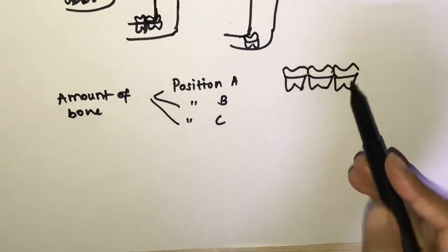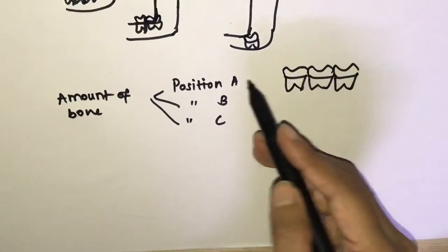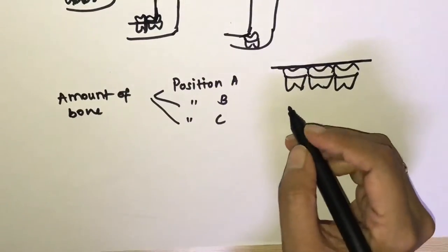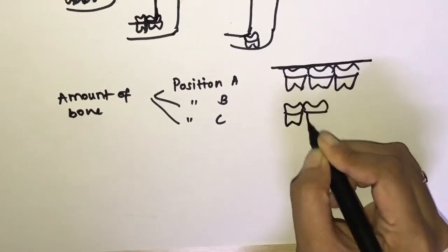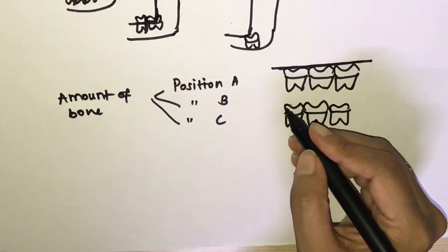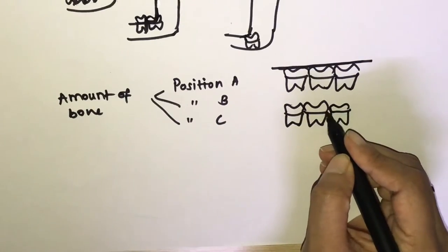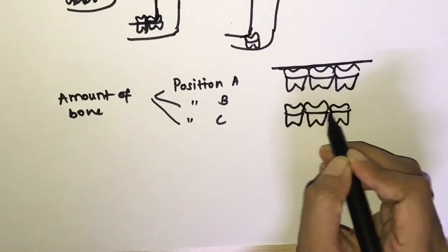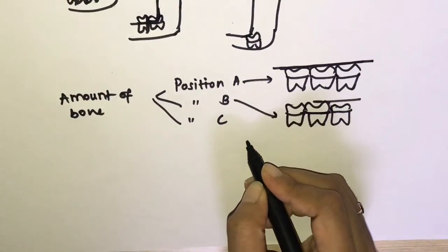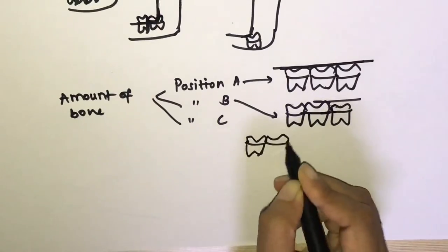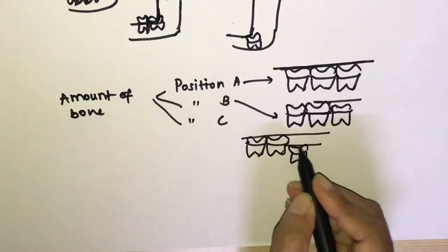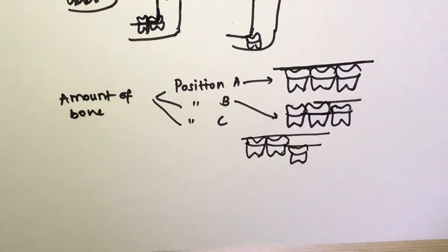In position A, the occlusal plane of the impacted tooth is nearly in the same plane as the occlusal plane of the second molar. In position B, the occlusal plane of the impacted tooth is between the cervical line and the occlusal plane of the second molar. In position C, the occlusal plane of the impacted tooth is below the cervical line of the second molar.